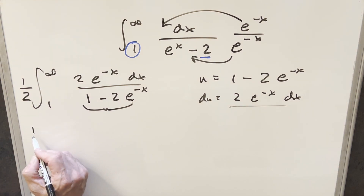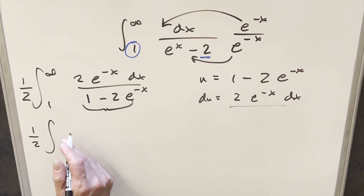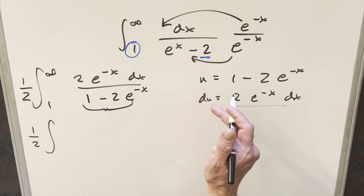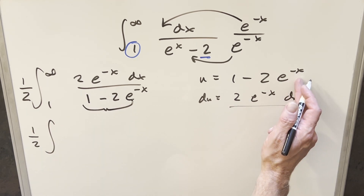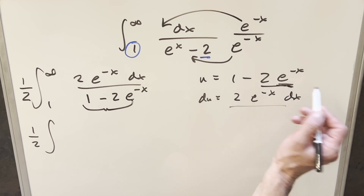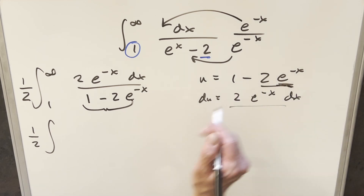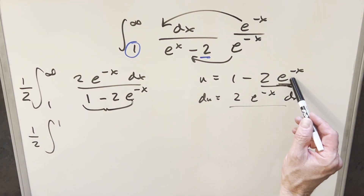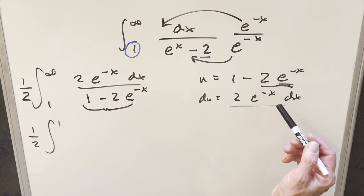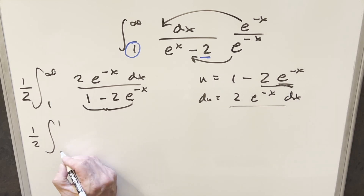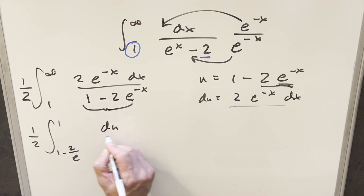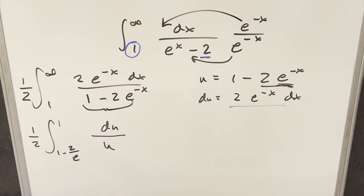Now evaluating the bounds. When x is going to infinity, the e to the minus x term goes to 0, so the whole expression goes to 0, and we're just left with 1 for the upper bound. Evaluating at x equals 1, e to the minus 1 is 1 over e, so we end up with 1 minus 2 over e for the lower bound. Updating everything else, we just have du over u.